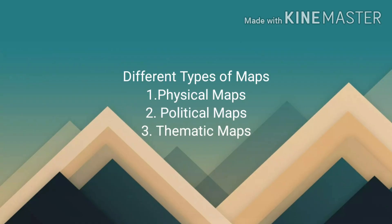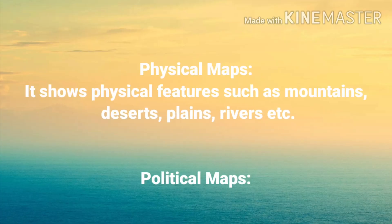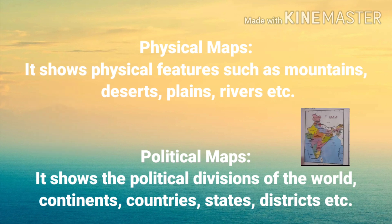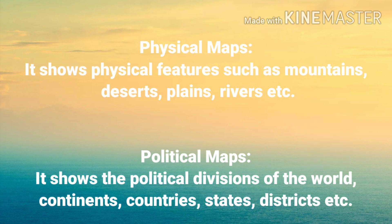There are different types of maps: physical maps, political maps, and thematic maps. Physical maps show physical features such as mountains, deserts, plains, and rivers. Political maps show the political divisions of the world — continents, countries, states, and districts.